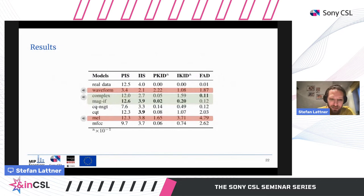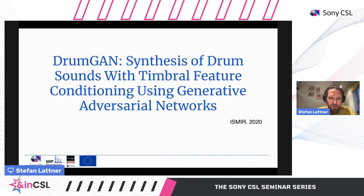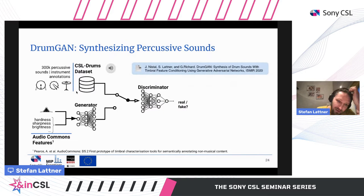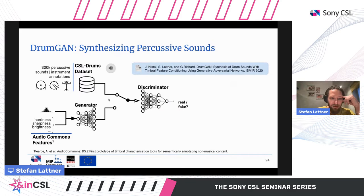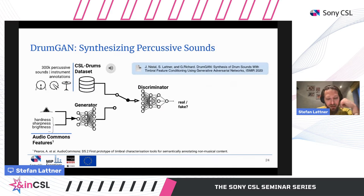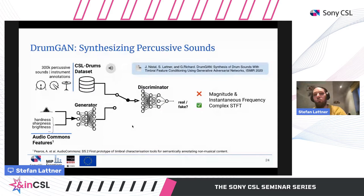We used complex STFT components for percussive sounds in our first paper, DrumGAN, which aims at synthesizing drum sounds with a generative adversarial network. We used around 300,000 short percussive instrument samples with instrument annotations — kick, snare, or cymbal — and extracted perceptual features from those sounds using a feature extractor. We used these features to condition the generator, so that a user can afterwards control perceptual features of the generated sounds. The model was trained at 44 kHz.